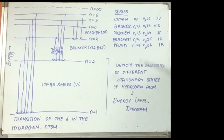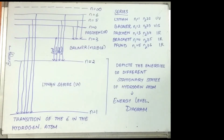The diagram depicts the energies of different stationary states of a hydrogen atom and is known as an energy level diagram. Hydrogen has the simplest line spectrum. There are more complex line spectra for heavier atoms. The common features of line spectra are: the line spectrum of each element is unique, and there is regularity in the line spectrum of each element.